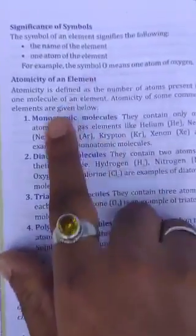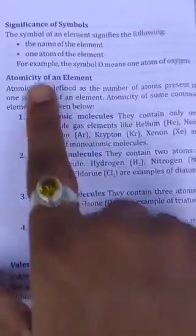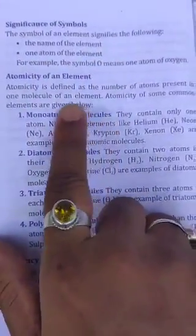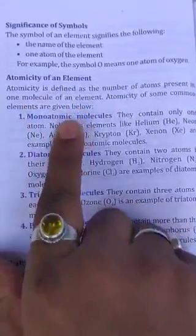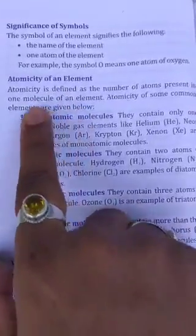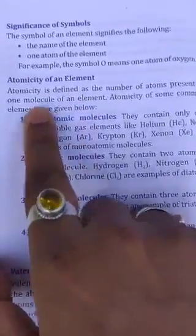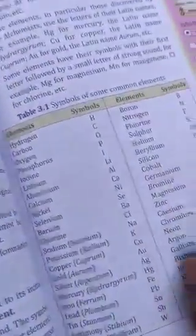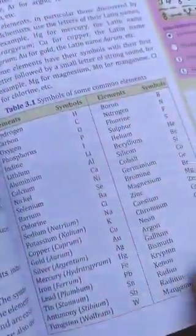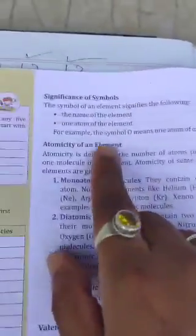Hello students, myself Kyanaranjan Sahu. Today I am going to discuss chapter 3 in chemistry for class 7. We already completed symbols, how to write symbols, and I already told you to learn the tables. Now I am going to discuss the significance of a symbol.